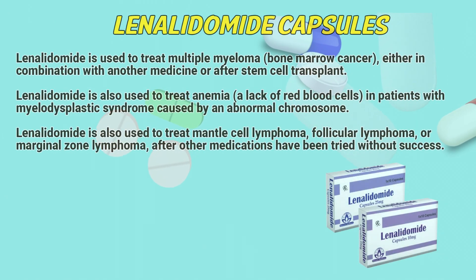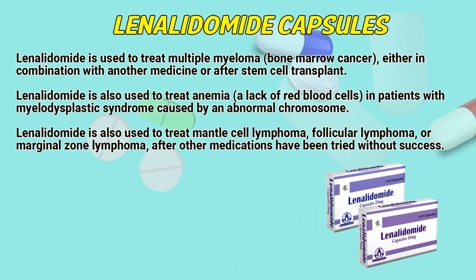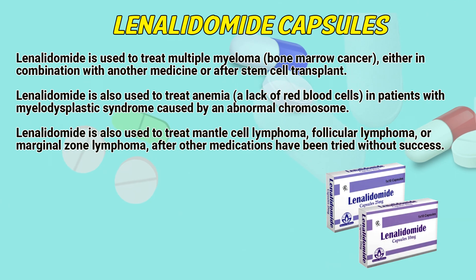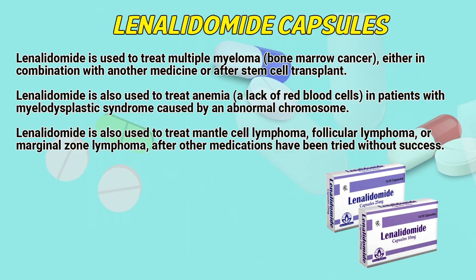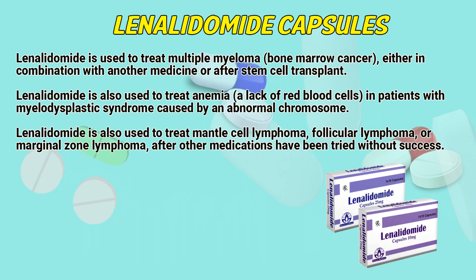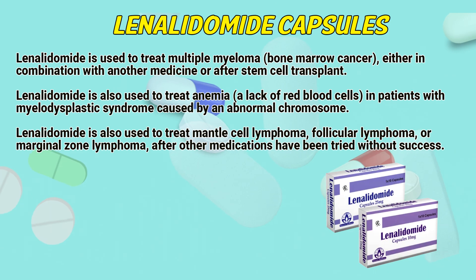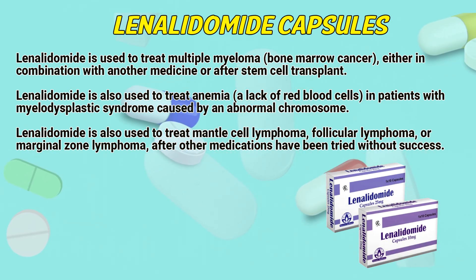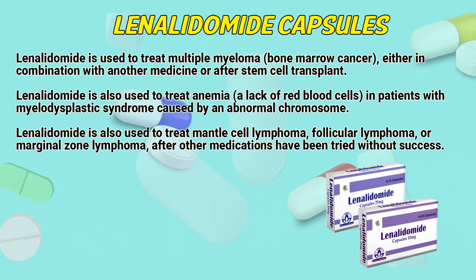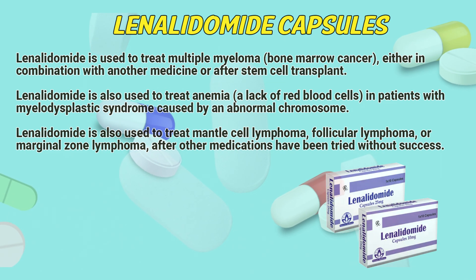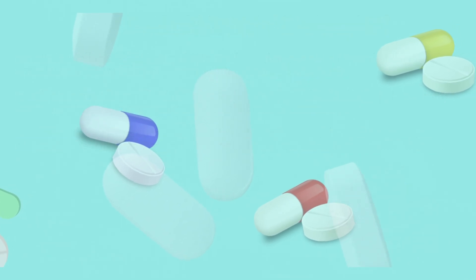Lenalidomide is used to treat multiple myeloma, bone marrow cancer, either in combination with another medicine or after stem cell transplant. Lenalidomide is also used to treat anemia, a lack of red blood cells, in patients with myelodysplastic syndrome caused by an abnormal chromosome. Lenalidomide is also used to treat mantle cell lymphoma, follicular lymphoma, or marginal zone lymphoma after other medications have been tried without success.